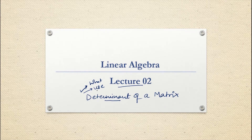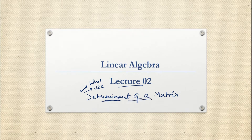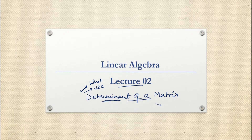Determinant — as the name says — is something that determines the nature of something. Same way, the determinant of a matrix is the property of the matrix which determines the nature of the matrix. The determinant for a matrix is nothing but a number, and that number actually tells us many things.